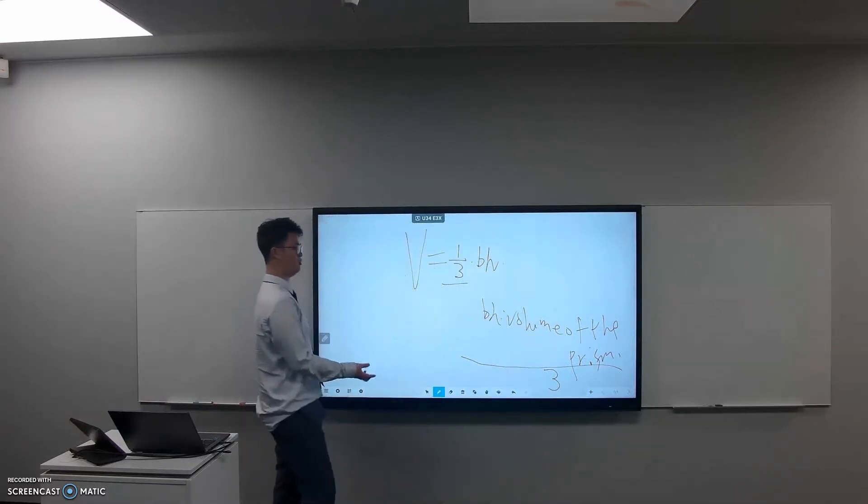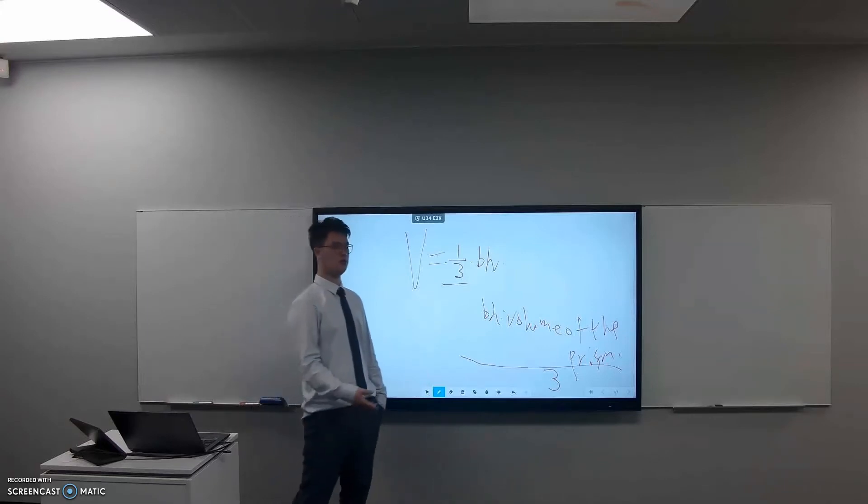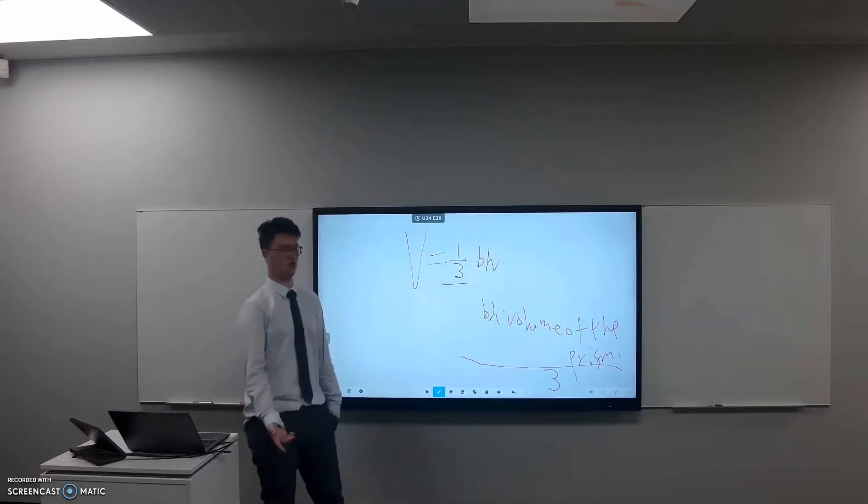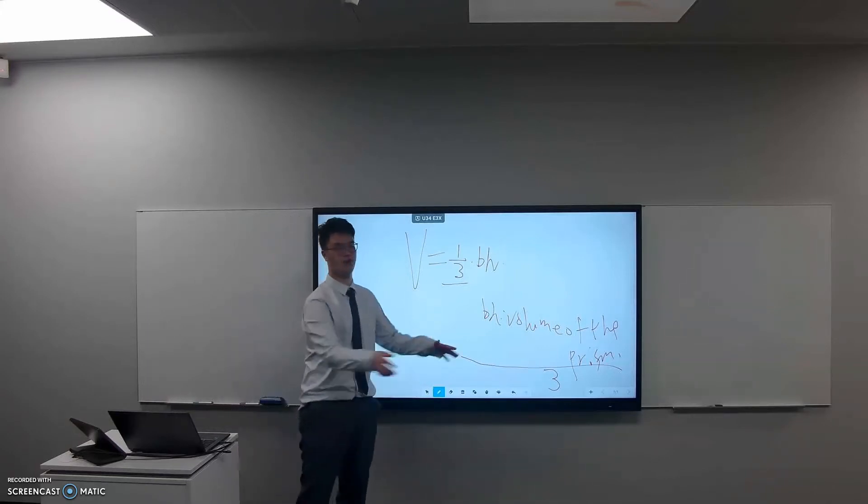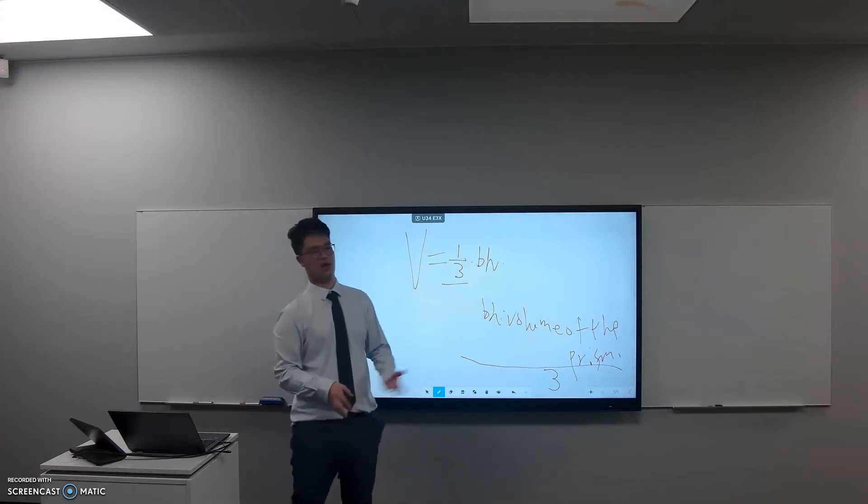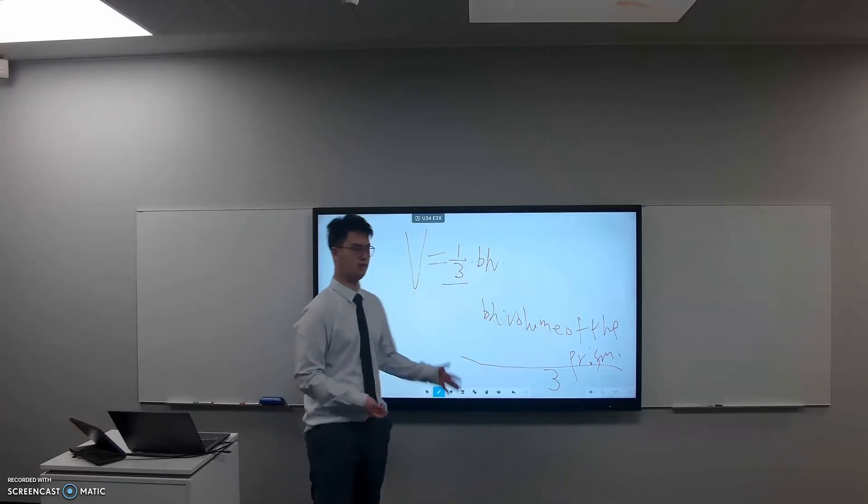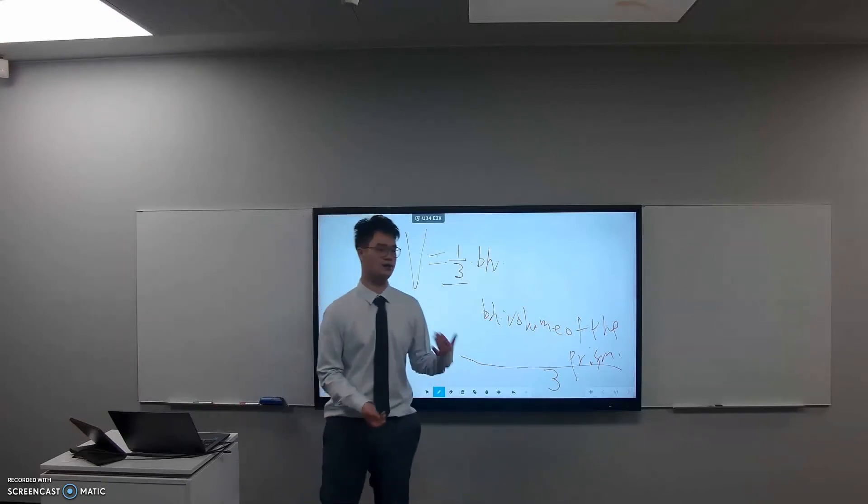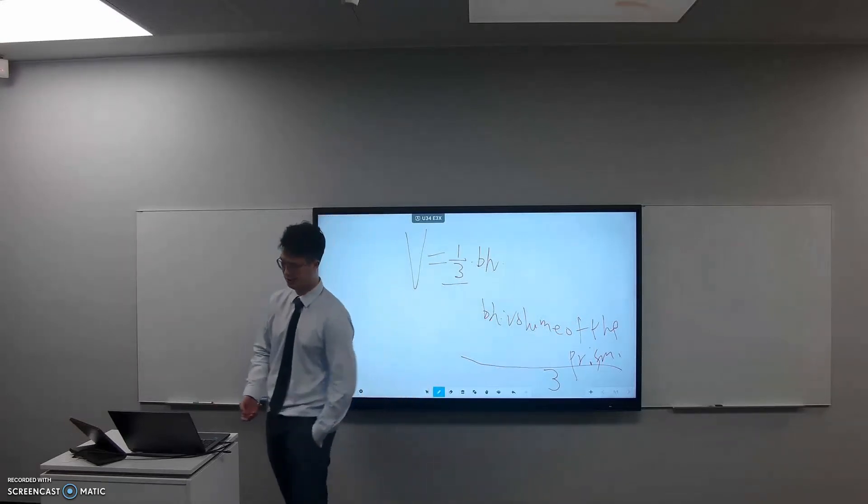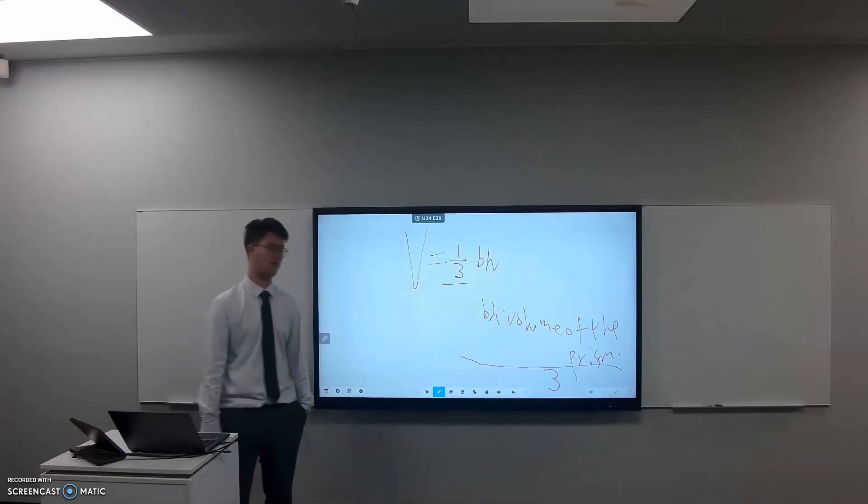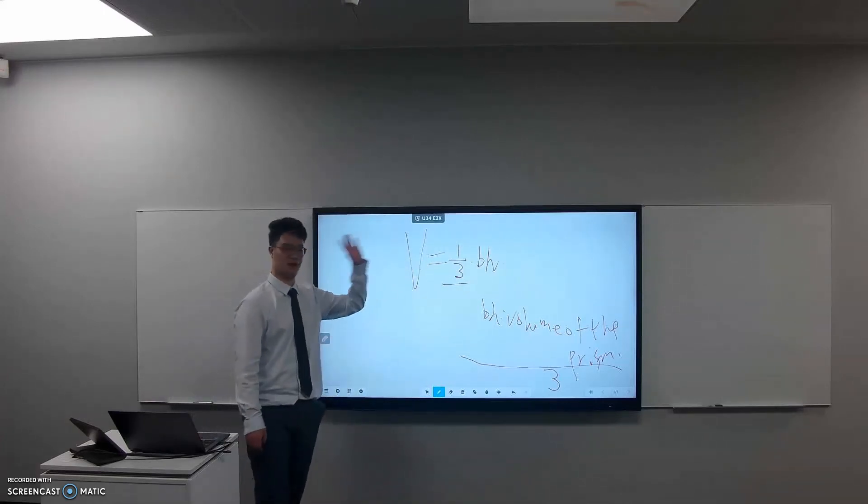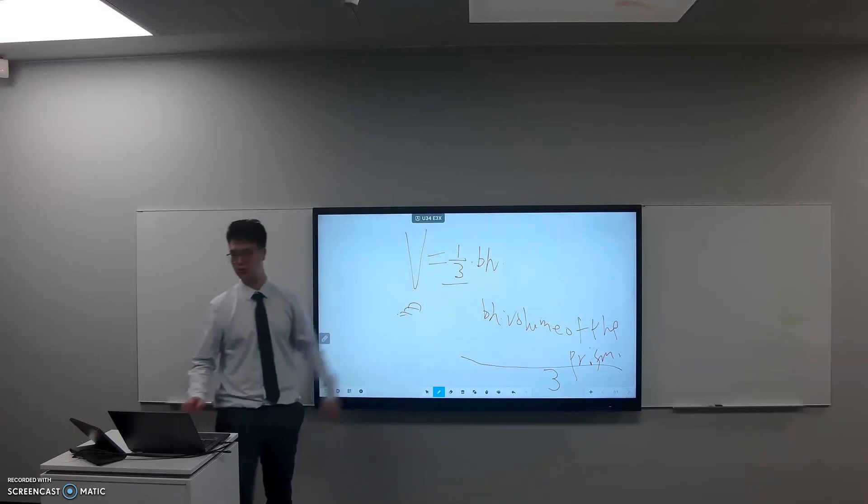But for a cone, I mean, it depends. It's like a triangular prism, you just calculate whatever the triangle area is and times the height divided by three. If it's a cone, you calculate the circle and times the height and divided by three. It's just the same thing. You just need to calculate the area of the base, times the height, divided by three, you get the volume.